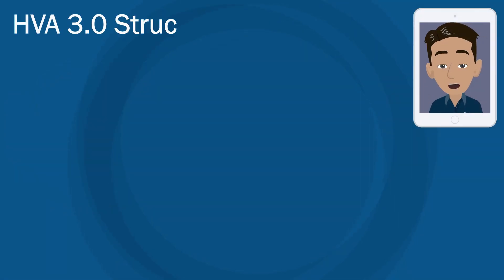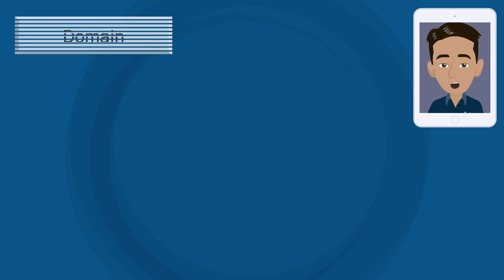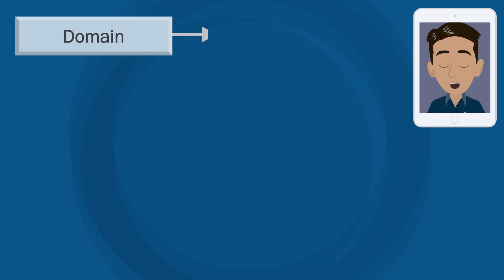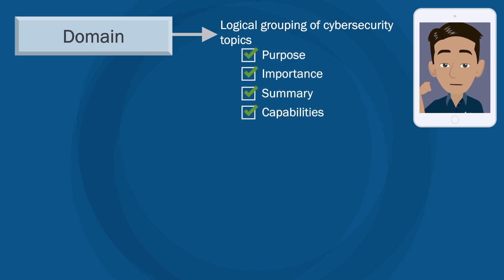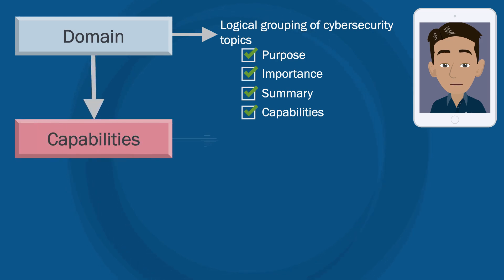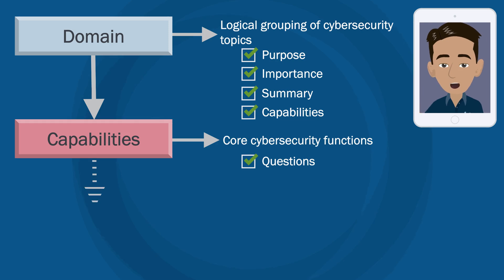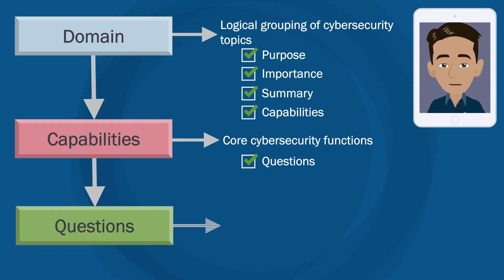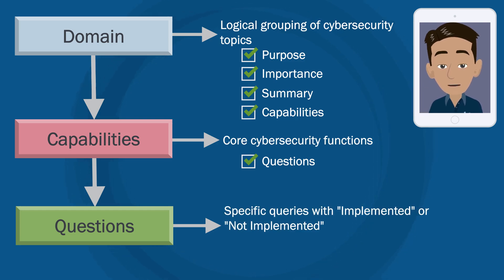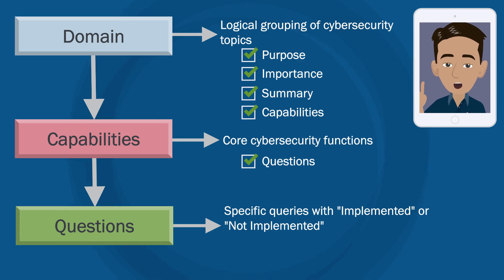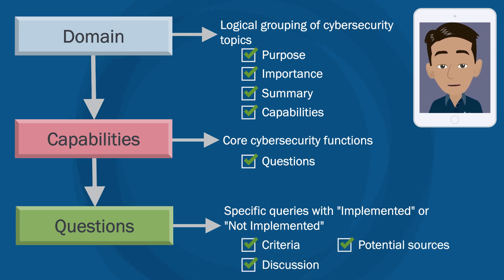The structure of HVA 3.0 has changed from the previous version. The top level of structure is now called a domain — similar to discussion topics from HVA 2.0, they are logical groupings of related cybersecurity topics. The next level are capabilities: core cybersecurity functions that the assessor is seeking to determine if the HVA and organization are performing. Capabilities are the main objective of the assessment and the level at which risks will be identified and referenced in the report. Finally, the last level of structure are questions — specific queries answered in a yes or no format, marked as implemented or not implemented, providing the detailed information needed to determine if capabilities are being performed.